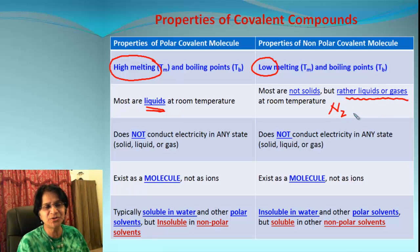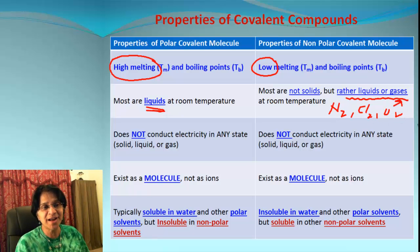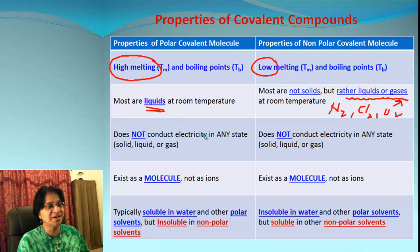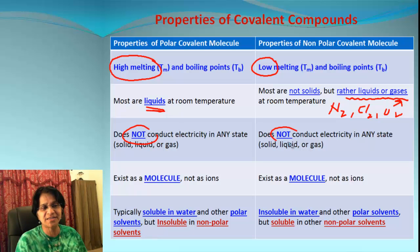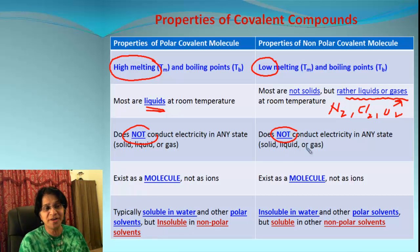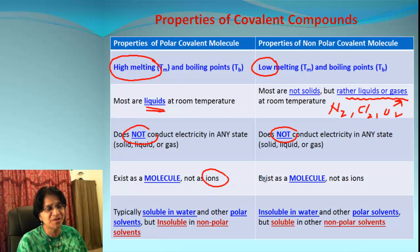As examples, N2, Cl2, and O2 are all non-polar and they are gases. Both polar and non-polar compounds will not conduct electricity because there is no flow of electrons among these molecules. They exist as molecules, not as ions — they will not ionize at all.